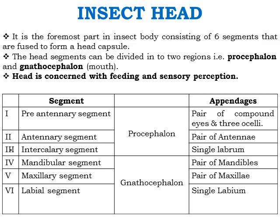The insect head is the first and foremost part of the insect body, consisting of six segments that are fused to form a head capsule. Collectively the head is known as the head capsule. The head is concerned with feeding and sensory perception, and these six segments along with their respective appendages have unique importance in insect activity.